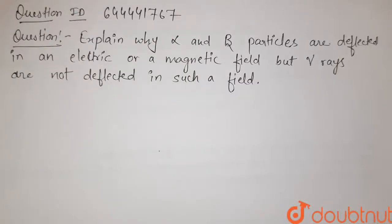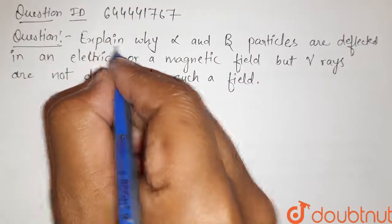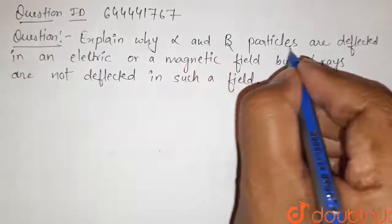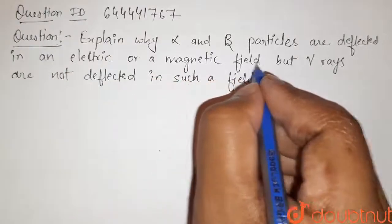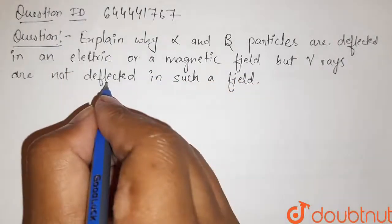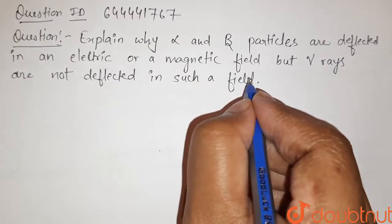Hello student, here is our question. Explain why alpha and beta particles are deflected in an electric or a magnetic field, but gamma rays are not deflected in such a field.